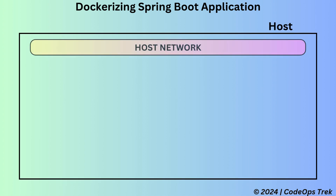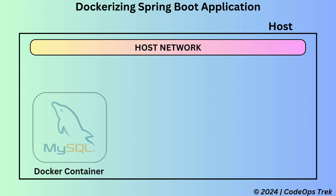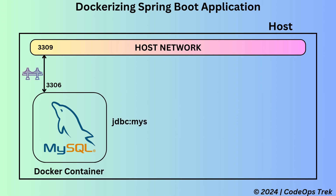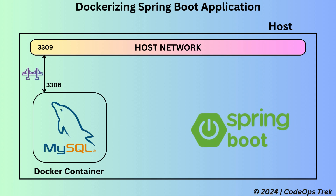Inside this host system, we have a network called the host network. Our MySQL database is running in a Docker container, and its default port 3306 is mapped to port 3309 of the host network. This network is referred to as the bridge network in Docker. This setup allows the database to be accessible via localhost:3309. Similarly, our Spring Boot application is running directly on the host network at port 8080. And since the database is mapped to localhost, our application can easily connect to the database using localhost:3309 and perform CRUD operations.